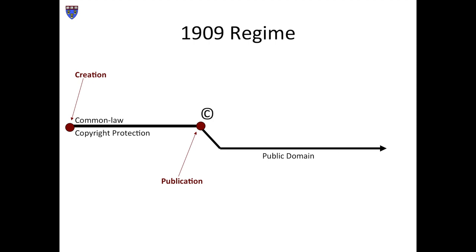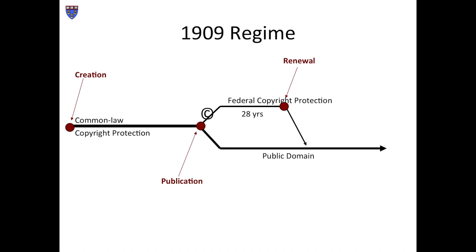If, by contrast, you or your publisher attached to all copies of the published book the requisite notice, then you did acquire federal copyright protection — but it did not last forever. Rather, it lasted for an initial term of 28 years. When that term ended, the novel again fell into the public domain, unless you or a member of your family renewed the copyright, in which case it would enjoy protection for a second 28-year term, whereupon it would finally and permanently fall into the public domain.